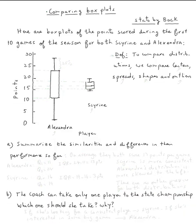The topic is comparing box plots. Let's read the definition. The definition says to compare distributions, we always compare centers, spreads, shapes, and outliers.